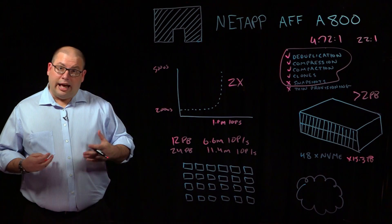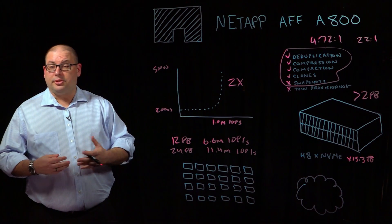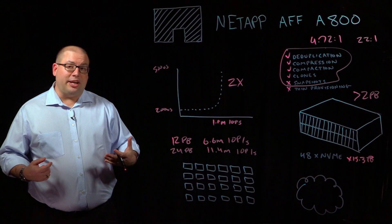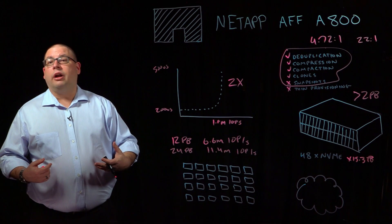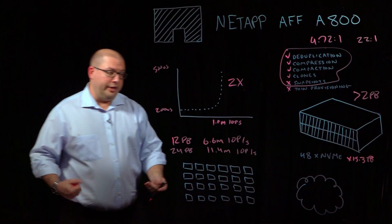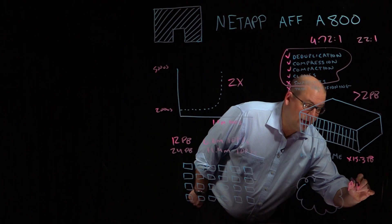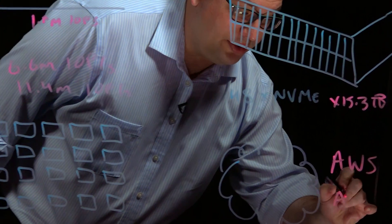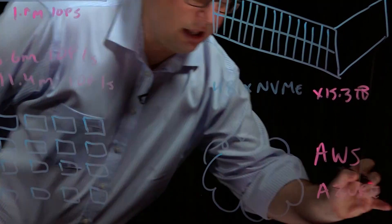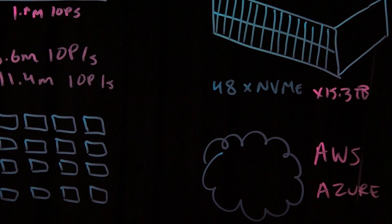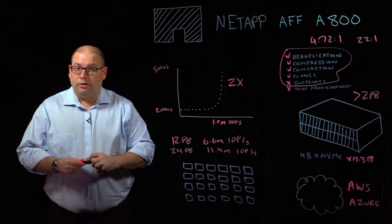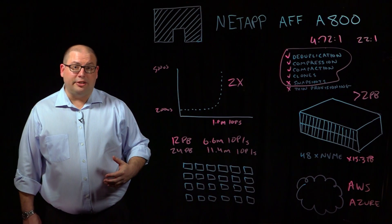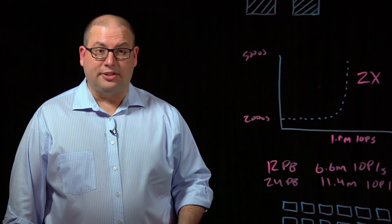We also recognize that data sets don't require the same amount of performance during their lifetime. And so as data ages and gets cold, the A800 is able to tier cold data non-disruptively to the cloud of your choice, whether that's AWS from Amazon, Microsoft's Azure, or other clouds. Automatically moving cold data in a non-disruptive fashion to the cloud to reduce storage costs, and then back into the AFF SSD tier on an as-needed basis when you're performing frequent access.